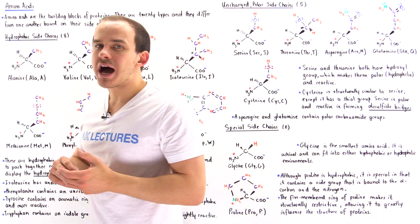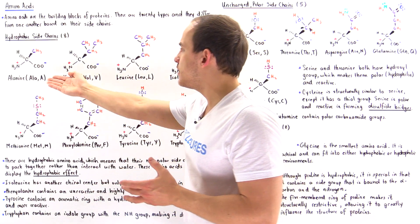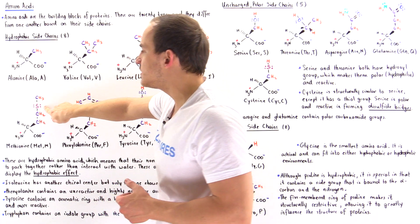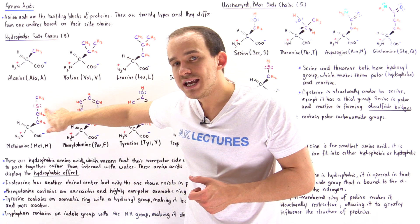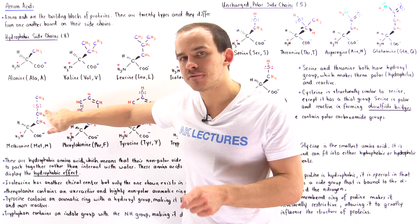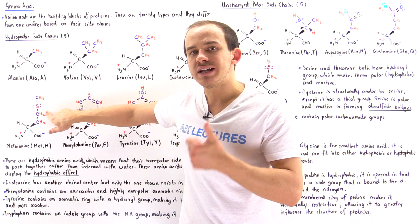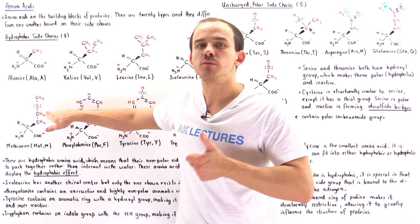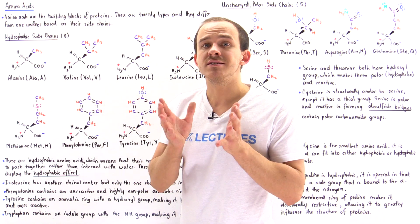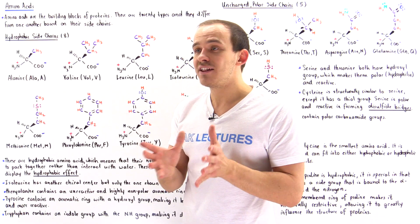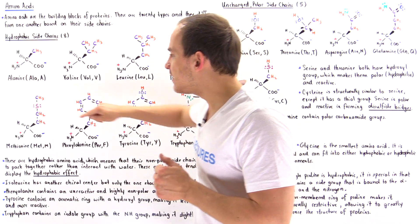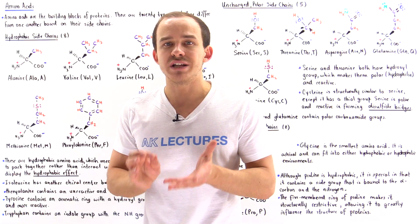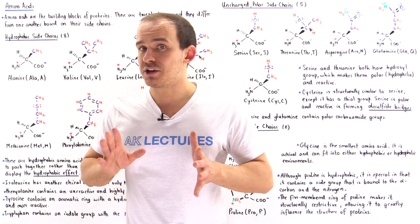Now let's move on to methionine. Unlike alanine, valine, leucine, and isoleucine, the methionine side chain contains a sulfur atom. The electronegativity of carbon is 2.55 and the electronegativity of sulfur is 2.58 — essentially the same — and that's exactly why the carbon-sulfur bonds are nonpolar. So the side chain of methionine is also nonpolar, nonreactive, and hydrophobic.